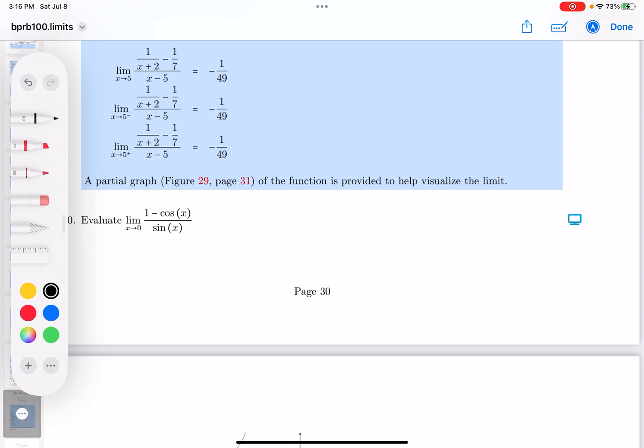Okay, so evaluate the limit. Cosine function and sine function are fairly easy to do. Unfortunately, what happens at the top, the top is zero and the bottom is also zero.